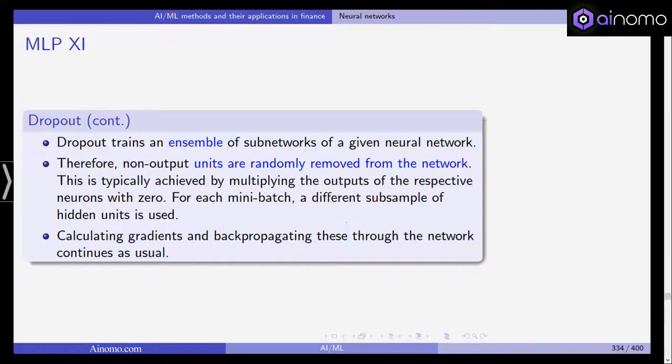Dropout trains an ensemble of subnetworks of a given neural network with non-output units that are randomly removed from the network. This is typically achieved by multiplying the outputs of the respective neurons with a zero. For each mini-batch, a different subsample of hidden units is used, and then we calculate the gradients and we do backpropagation through these networks as usual.